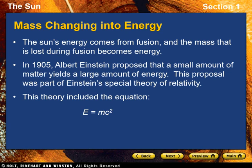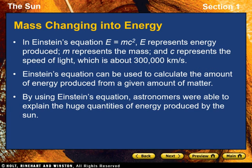This theory included the equation E = mc². In this equation, E represents energy produced, m represents mass — the amount of matter that is changed — and c represents the speed of light, which is about 300,000 kilometers per second. Einstein's equation can be used to calculate the amount of energy produced from a given amount of matter, and astronomers used it to explain the huge quantities of energy produced by the sun.